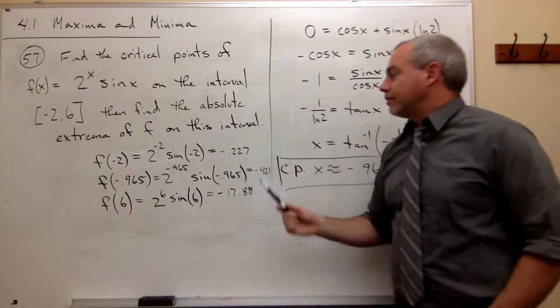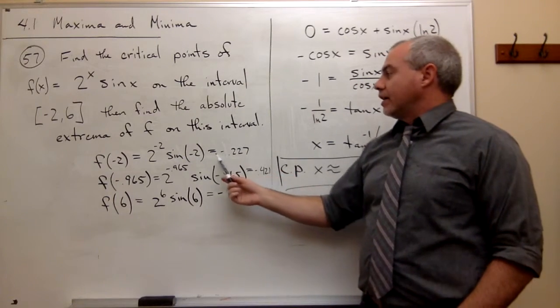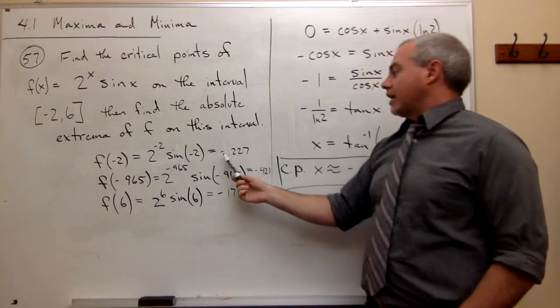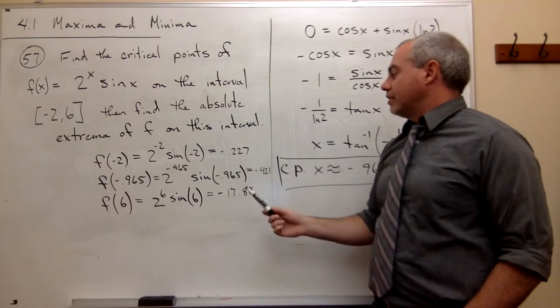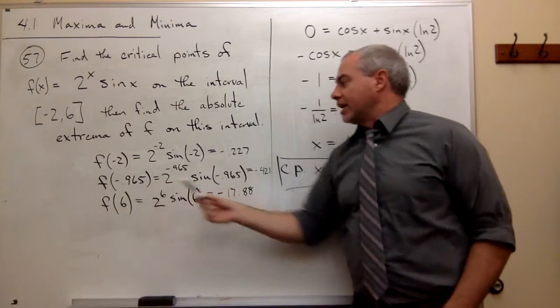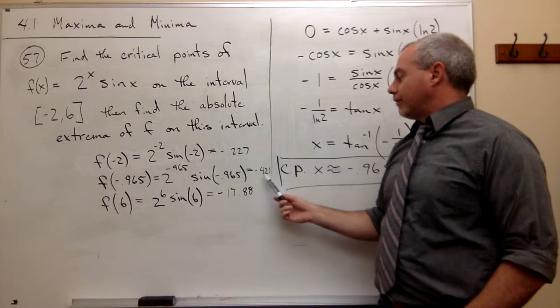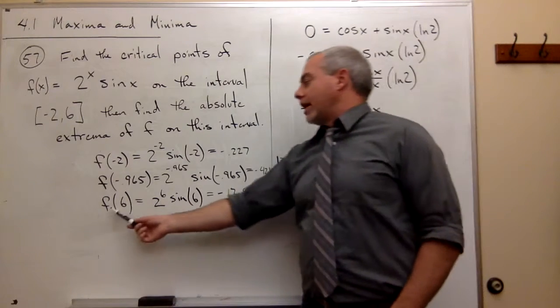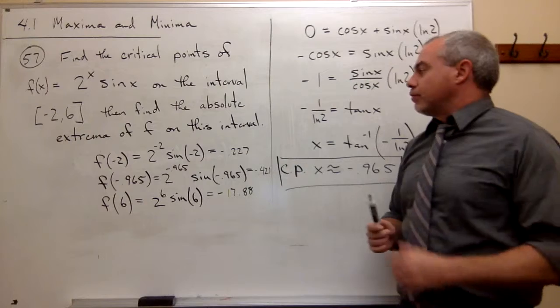I plug these into my calculator quickly, and I got for f of negative 2, I get negative 0.227. For f of negative 0.965, I got negative 0.421. And for f of 6, I got negative 17.88.